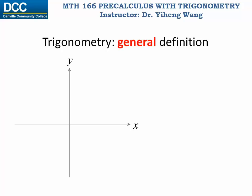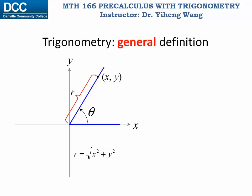Now let's look at the general definition for trigonometry that can be used to find the trigonometric function values for any angle. For angle theta, we draw it in its standard position. On its terminal side, if there's a point with coordinates x and y, we can find the distance from this point to the origin, r. r is found through the distance formula: square root of x squared plus y squared. Now x and y being the coordinates can be either positive or negative or zero, but since r is a distance, it is always positive.